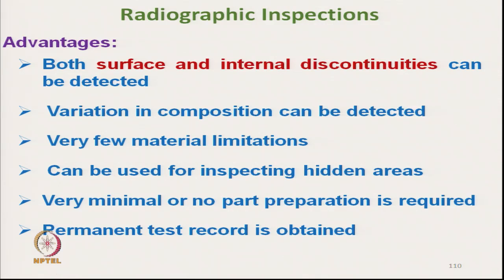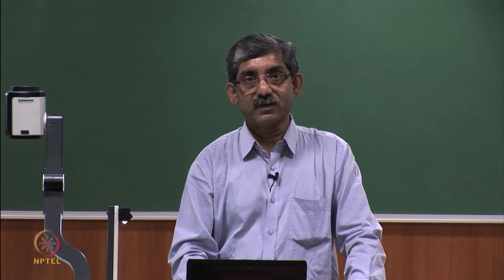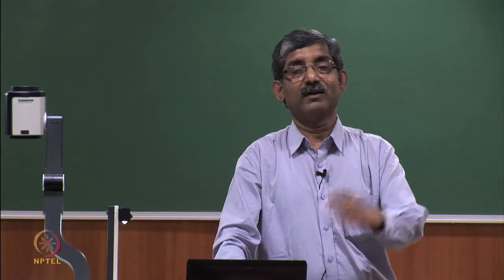The advantages of radiographic inspection are: both surface and internal discontinuities can be detected; variation in composition can be detected; very few material limitations so it can be used for a wide range of materials; can be used for inspecting hidden areas; very minimal or no part preparation is required; and a permanent test record is obtained, which can be referred to in the future.